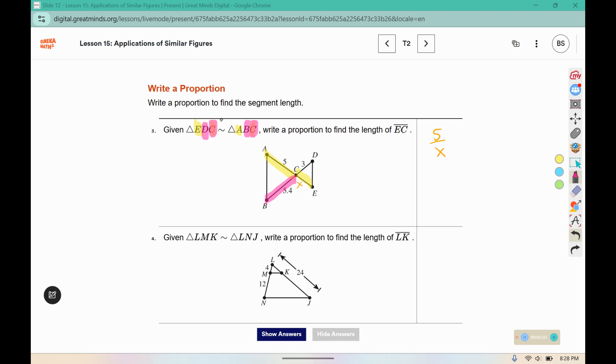should match up with DC from the other triangle, or the other, yeah, the other triangle, side length. So we have 5.4 and 3.